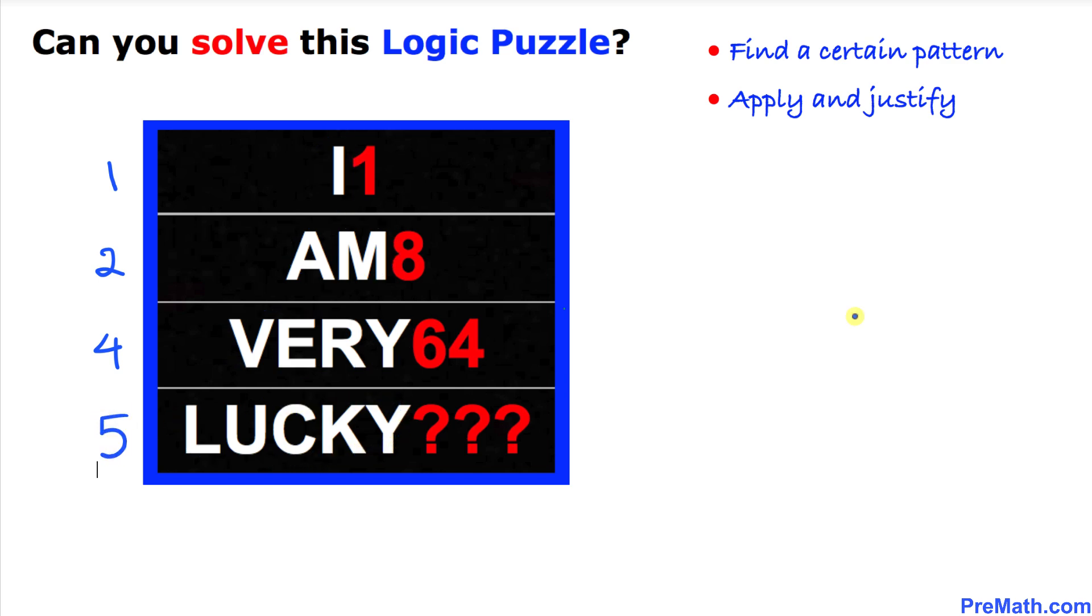We have a one over here. I'm going to write down one on the right hand side, and then we have a number eight. I'm going to write down eight next to it, and then we got 64 right up here.